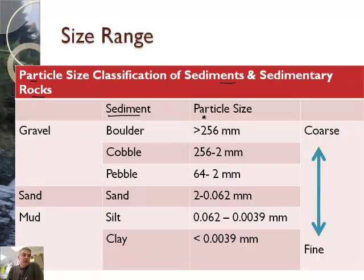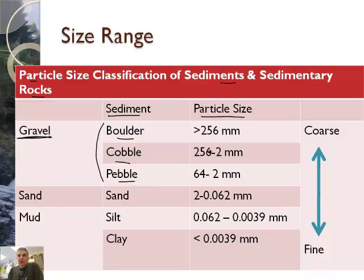The largest category is called gravel, but gravel is actually subdivided into several other categories: boulders, cobbles, and pebbles. Boulders are bigger than 256 millimeters. Between 64 and 256 millimeters is a cobble, and a pebble is 2 to 64 millimeters.